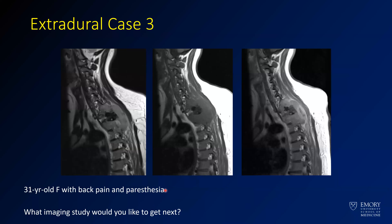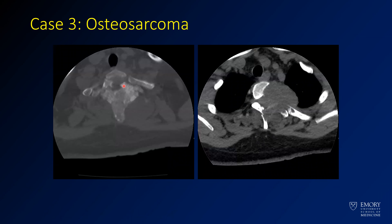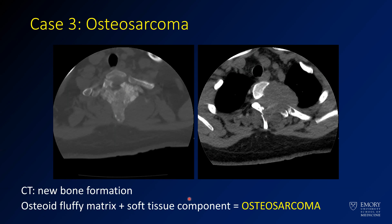Here is our third extradural case — a 31-year-old with back pain and paresthesias. There's a big expansile lesion off to the side, maybe coming from or involving the neural foramen, with low signal material in the middle that's dark on T2, T1, and post-contrast. Think about what you'd want next — you want a CT. This was a case of osteosarcoma, with a lot of new bone formation and soft tissue components. With this new bone formation, think about a bone-forming tumor. This is more of an osteoid-appearing matrix, without the rings and arcs you'd see with chondroid matrix. If you can tell someone you think this is a bone tumor, that's often enough to get to the biopsy.